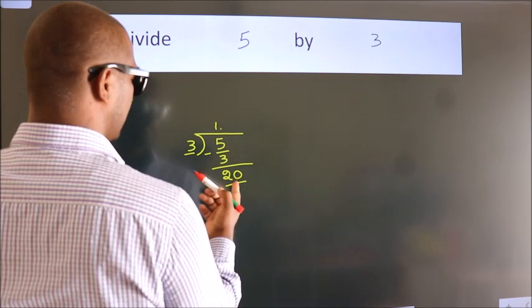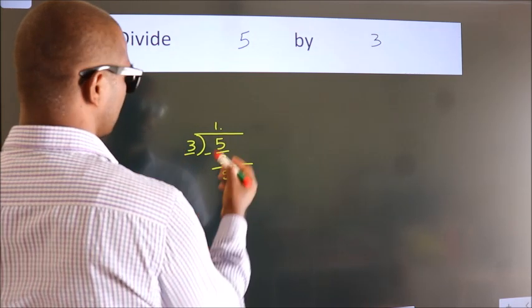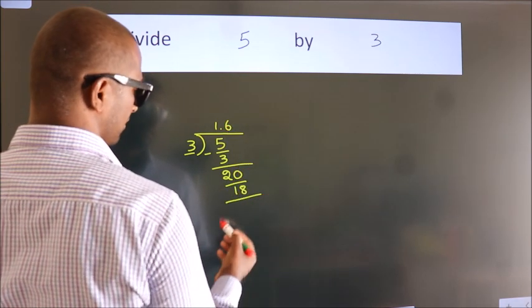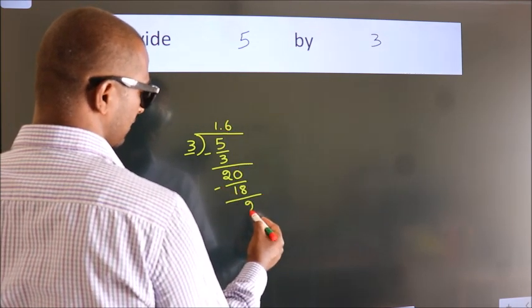A number close to 20 in the 3 table is 3 times 6 is 18. Now we subtract. We get 2.